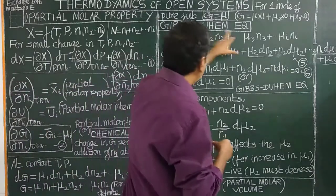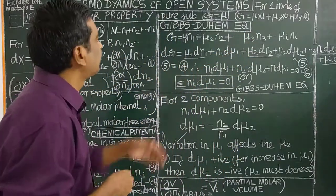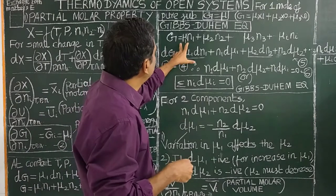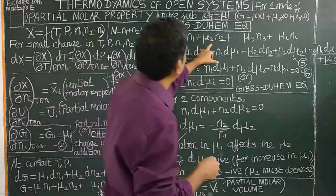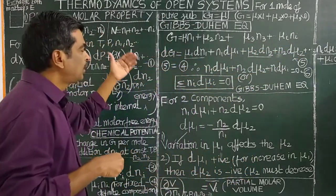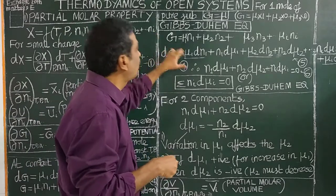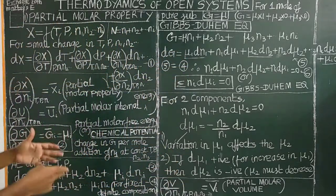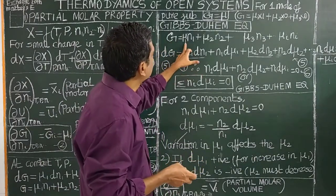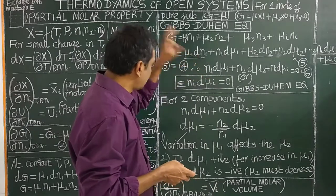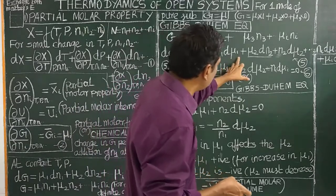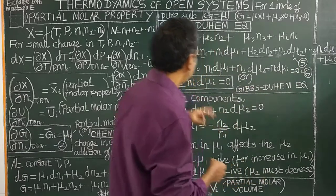Now let us derive the Gibbs-Duhem equation. For a system of fixed composition, the free energy is: G = μ1 N1 + μ2 N2 + μ3 N3 + ... Let us differentiate. The differential of free energy dG is written treating μ1 as constant times dN1, and N1 as constant times dμ1, and similarly for μ2 and N2.